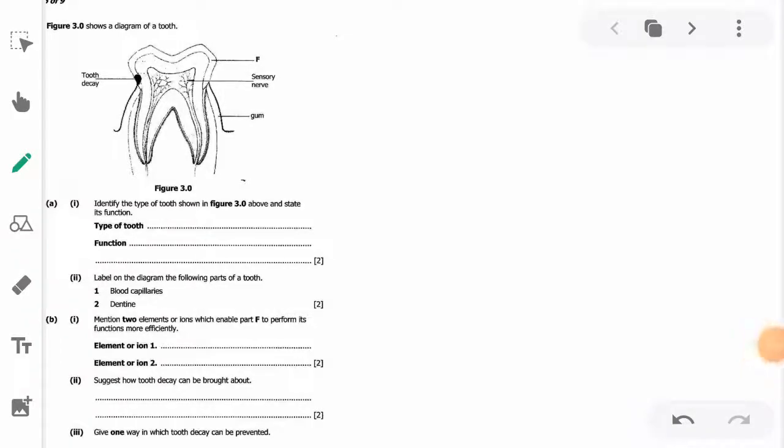Hello, welcome to this video. I'm Previous the Tutor, and in this video we'll look at a biology question on dentition or the structure of the tooth. Figure 3.0 shows a diagram of a tooth. Part A says identify the type of the tooth shown in Figure 3.0 above and state its functions.